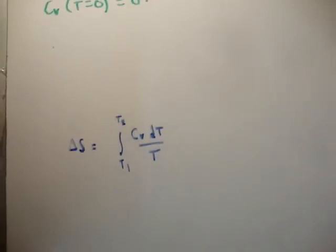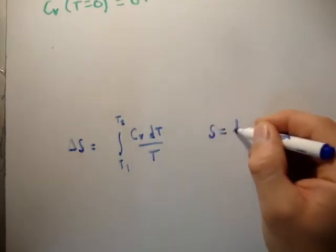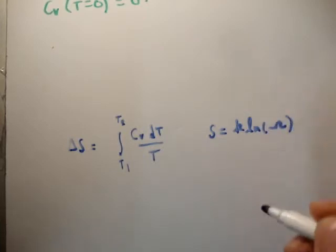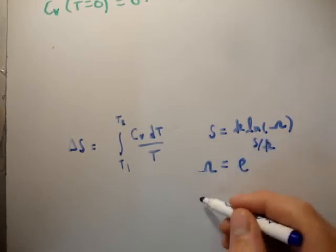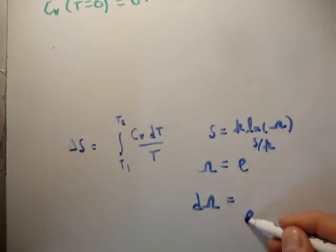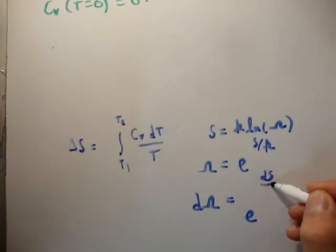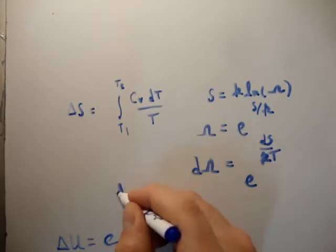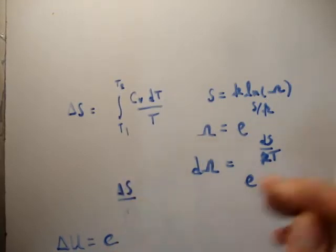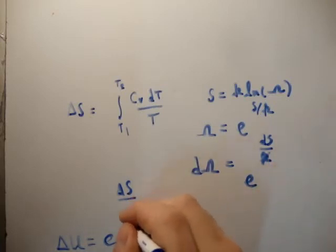Now is that useful? Well it is useful because we can look at the change in the multiplicity. And we know that S is equal to K times the natural logarithm of the multiplicity. Or we know that the multiplicity is equal to e to the S over K. Or that the change in multiplicity is equal to e to the dS over K. So you can see where this is going. We're plugging this formula in here. So we're getting that the change in the multiplicity is equal to e to the delta S over K.